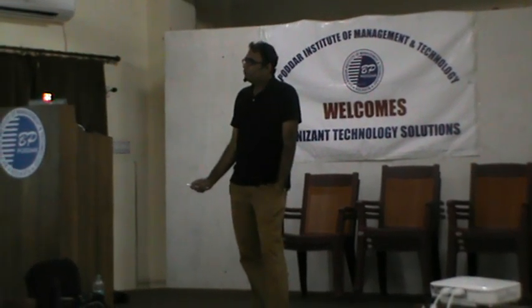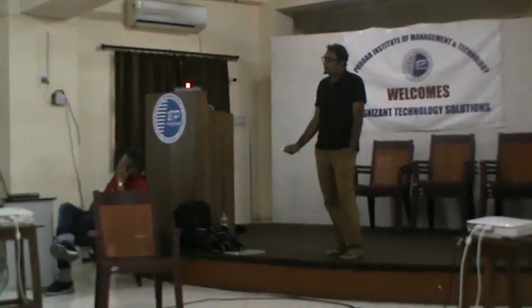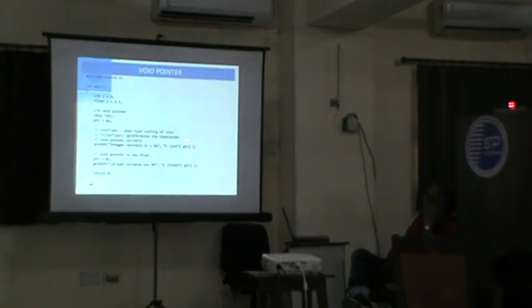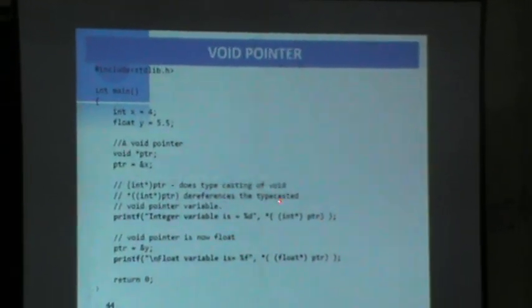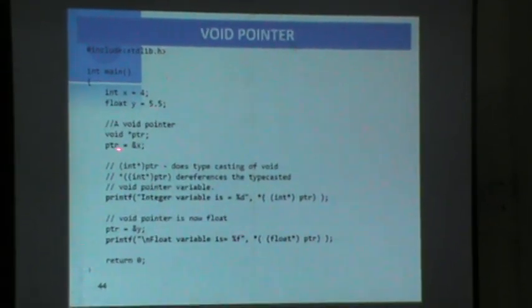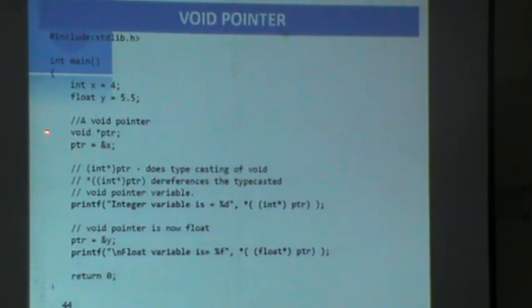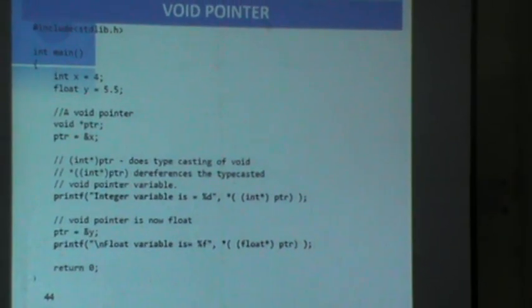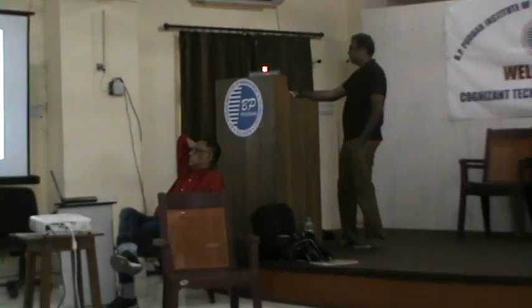For example: integer x equals 4, float y equals 5.5. We declare a void pointer of type void, and PTR can store the address of x. When you want to dereference it, you have to do a type cast. If you want to treat the value as a float, you have to type cast it to a float variable. The void pointer maps easily with any pointer type on assignment, but requires type casting on dereferencing. Functions like malloc and calloc always return void, which is why you can map them to any pointer type.